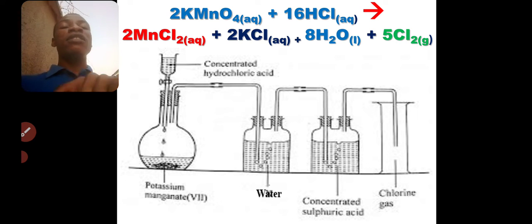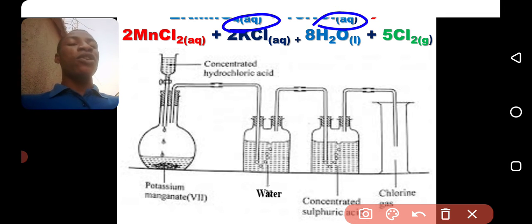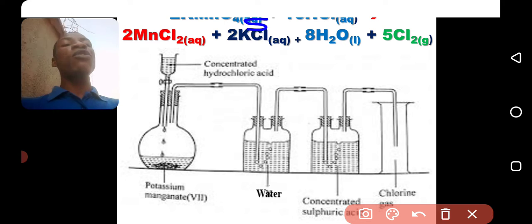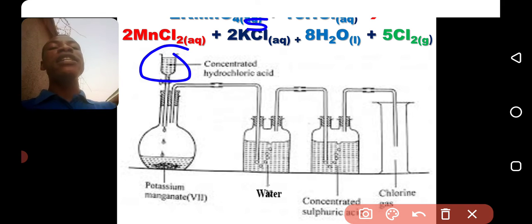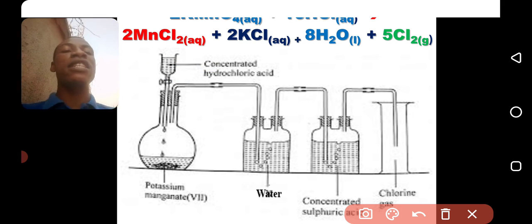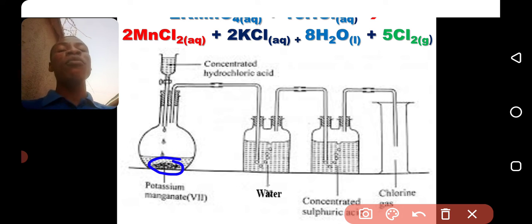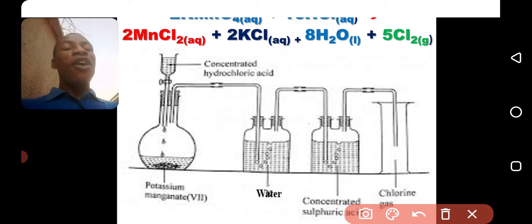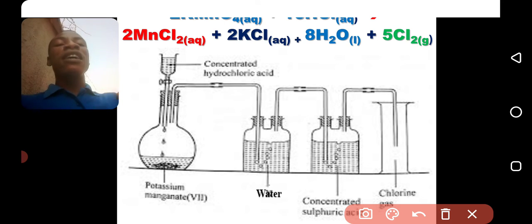Now look at the chemical setup in the laboratory. The KMnO4 should be solid, and HCl is aqueous, so you will need a thistle funnel that will contain the liquid reactant — HCl — and then a round-bottom flask where you place the solid reactant, potassium permanganate (KMnO4). When you introduce the HCl into the KMnO4, once they contact each other there will be a reaction.